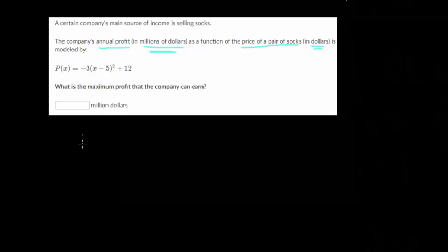We want to know what the maximum profit the company can earn. So again, we want to start with our letters. What is x and what is P(x)? A lot of times with our functions, the letters actually match up with the idea. So this is talking about the annual profit. So P(x) is profit, how much profit the company makes selling socks.